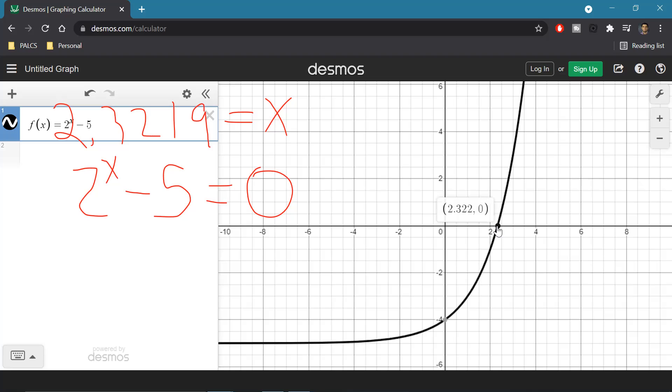You could just click the point. And there you go, 2.322. And notice that Desmos automatically rounds it to three decimal points. And that's what we got if we round this to three decimal places.